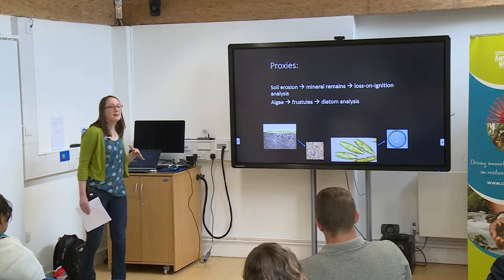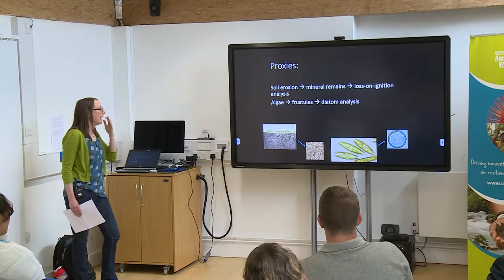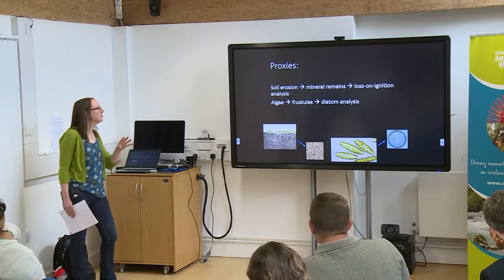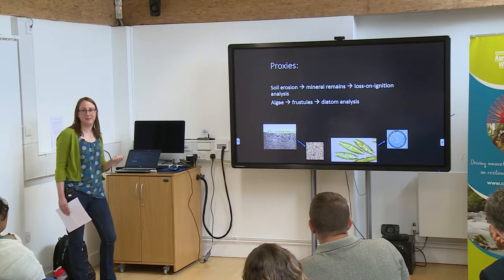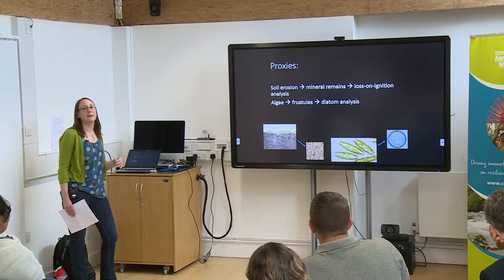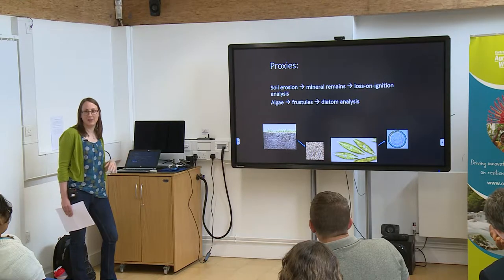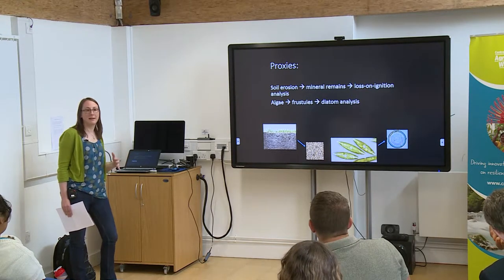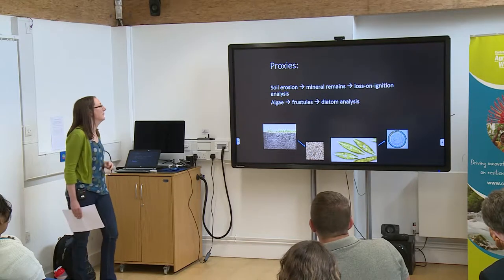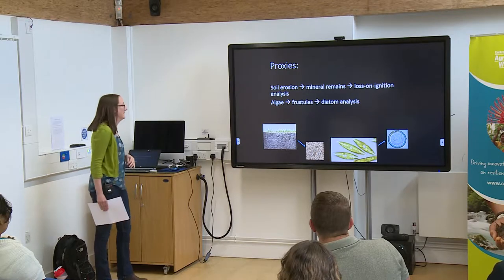We also get the remains of algae called diatoms preserved in sediments. They produce a silica shell called a frustule, which is what ends up preserved in the sediment. From that we can identify different species. They respond in various ways to things like pH, nutrient status of water bodies, and salinity, so we can use them to reconstruct sea level changes in coastal environments. They also have specific climate preferences, so they can tell us about both climate and water quality in the past.